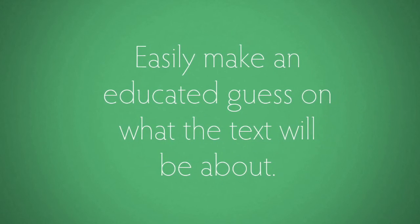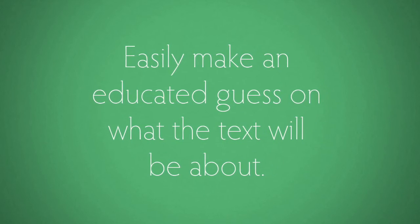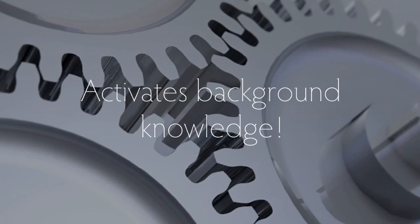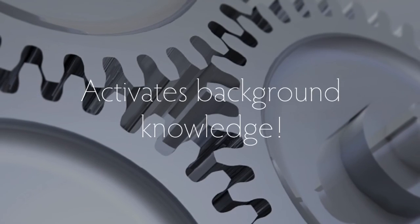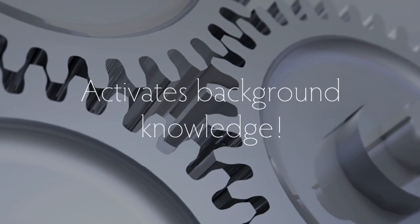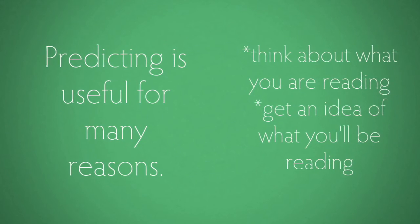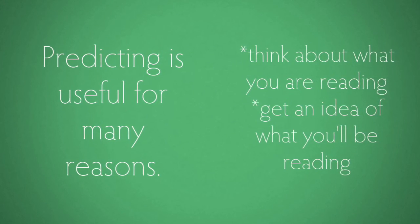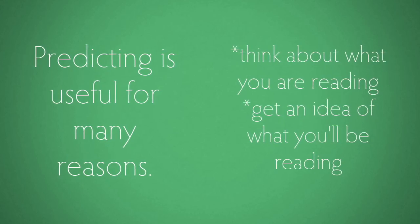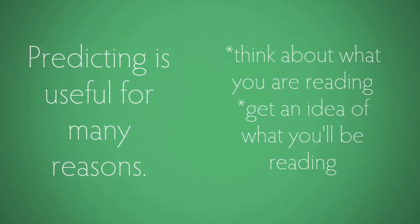By using prediction as a reading strategy, you can easily make an educated guess on what the text will be about. This is important because it activates the learner's background knowledge — what they might already know about the subject. It will ensure that they're thinking about what they're reading, and it will also be easier to understand because they'll have an idea of what they're reading about.